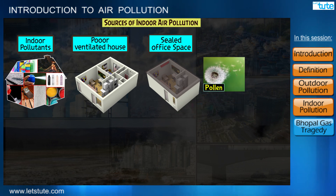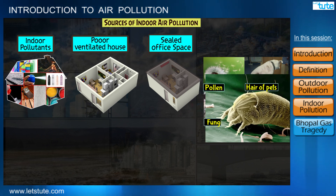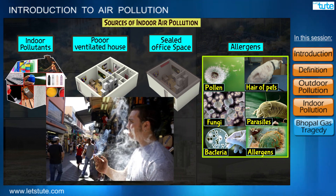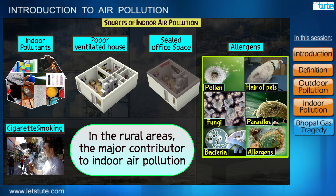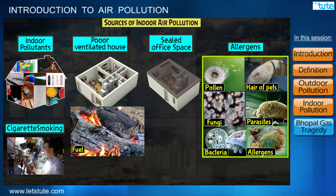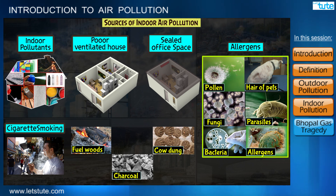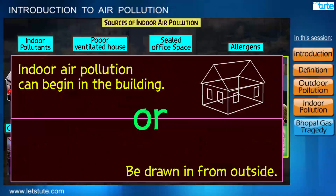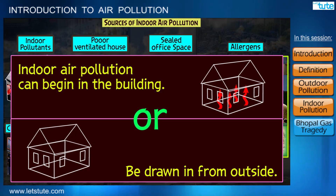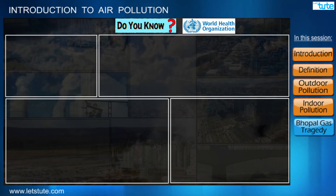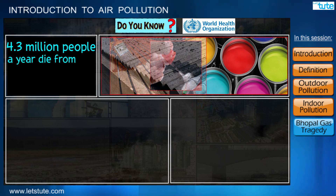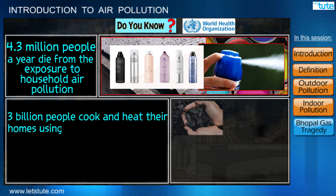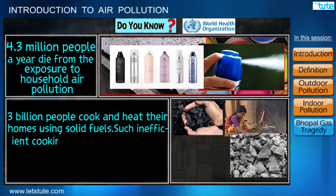Many times, pollens from plants, mites from the hair of pets, fungi, parasites, and some bacteria are present, which act as allergens. Furthermore, cigarette smoking can affect both smokers and non-smokers. In rural areas, the major contributor to indoor air pollution is the use of fuel wood, charcoal, and cow dung for cooking, which produces a lot of smoke emitting large amounts of carbon particles. Indoor air pollution can begin in the building or may be drawn in from outside. According to the World Health Organization, 4.3 million people a year die from exposure to household air pollution. Around 3 billion people cook and heat their homes using solid fuels, and such inefficient cooking and heating practices produce high levels of indoor air pollution.